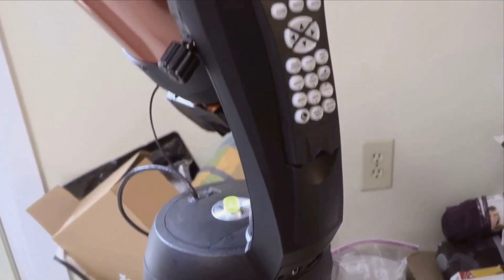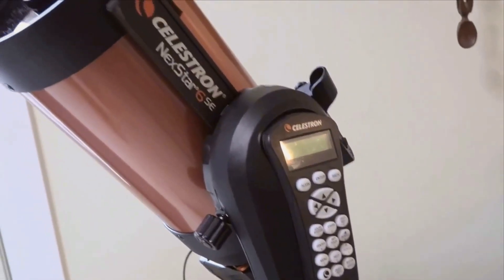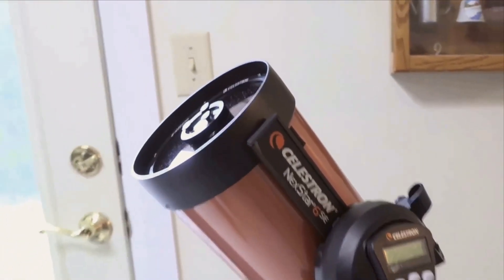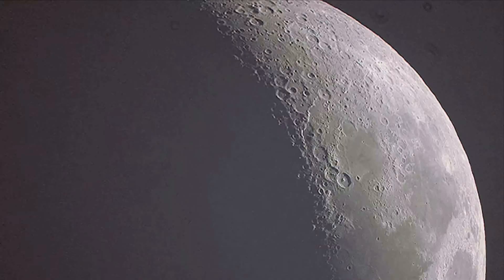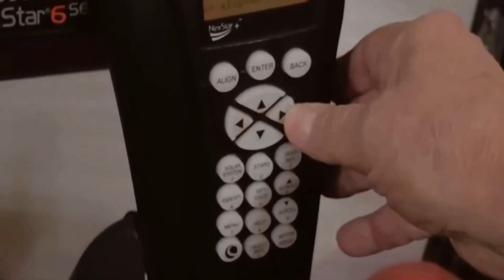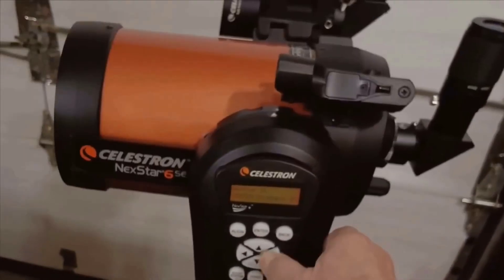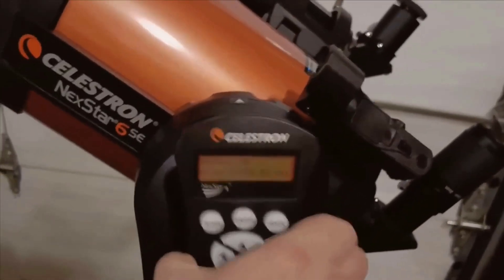A crucial thing to note is that this telescope requires eight AA batteries, which are not included in the package. However, in my experience, one set of batteries lasts quite a long time. We've been using it extensively, and the initial set of batteries is still holding up pretty well. It's always a good idea to keep spare batteries handy, but battery life hasn't been an issue for me so far.